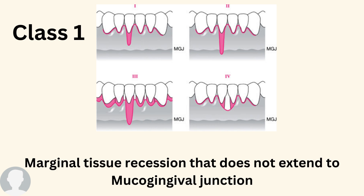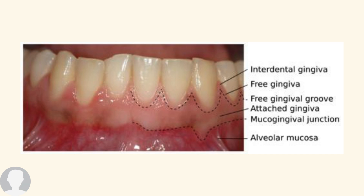In Class 1 of Miller's classification, there is marginal tissue recession that does not extend to the mucogingival junction. The mucogingival junction is the line located between the attached gingiva and the alveolar mucosa — between the light pink and dark pink of your gingiva. If your gums are receding but do not extend beyond that dotted line, this is Class 1.